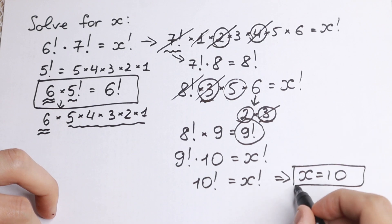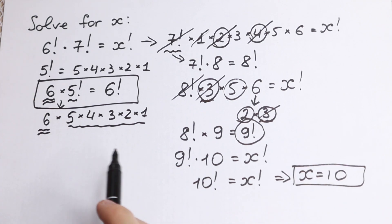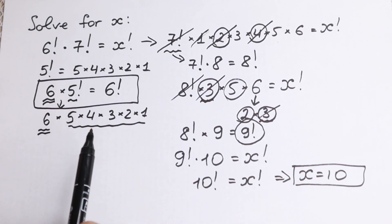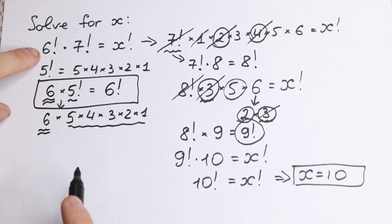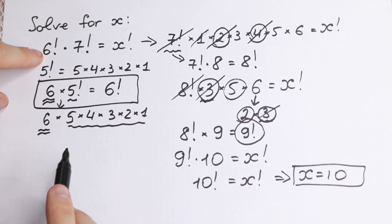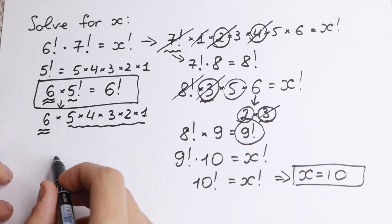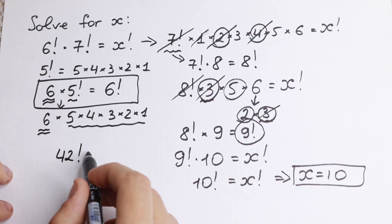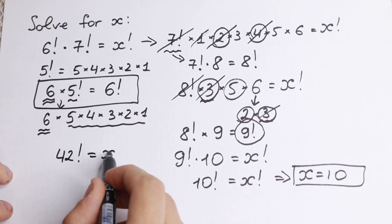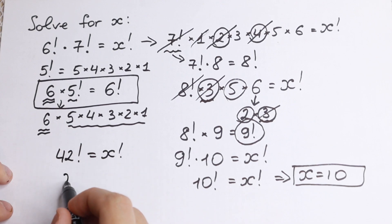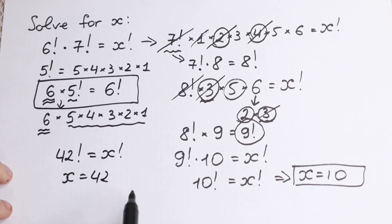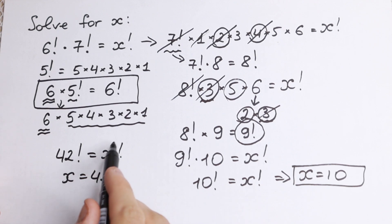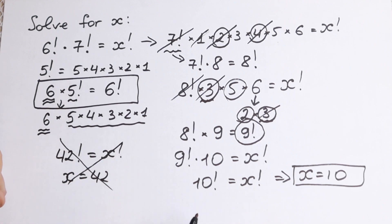Really good problem — I like this problem so much because it has a trick. It is not a classic case. At first sight you might multiply 6 factorial by 7 factorial and write it as 42 factorial, concluding x equals 42, which is absolutely incorrect. You cannot solve the problem that way.